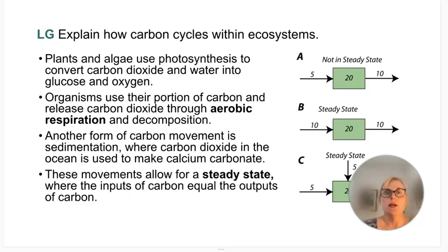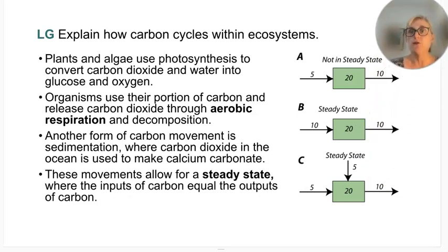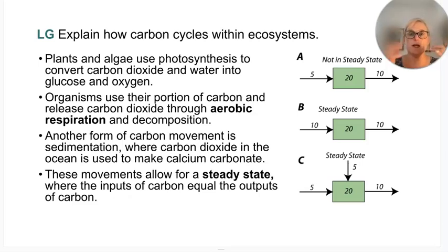Plants, algae, and phytoplankton use photosynthesis to convert carbon dioxide and water into glucose and oxygen. Then organisms use their portion of carbon and release it through aerobic respiration. In the carbon cycle, we also have carbon movement through sedimentation, where carbon dioxide in the ocean is used to make calcium carbonate. If the inputs of carbon are equal to the outputs, we have what's called steady state.